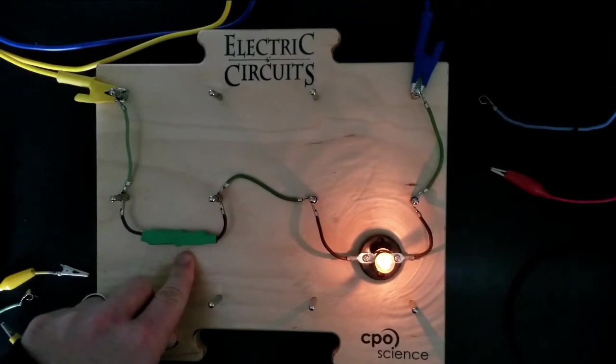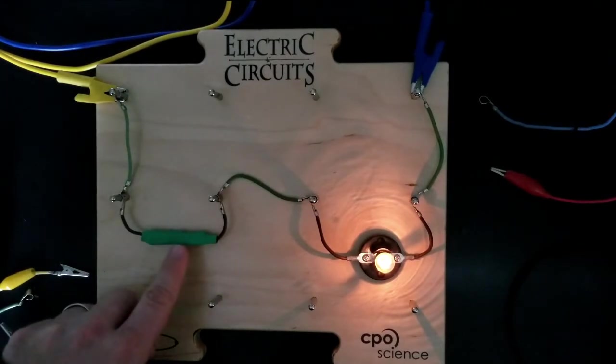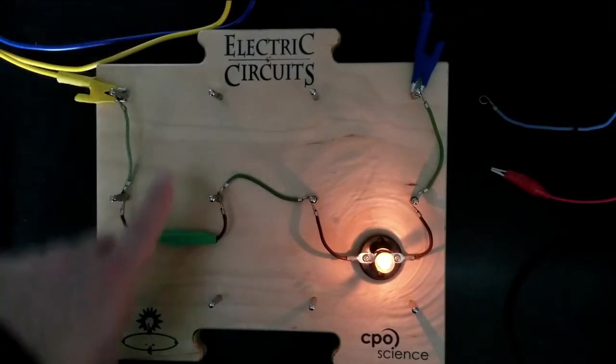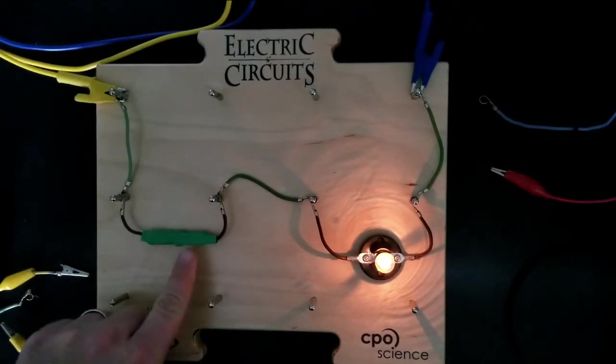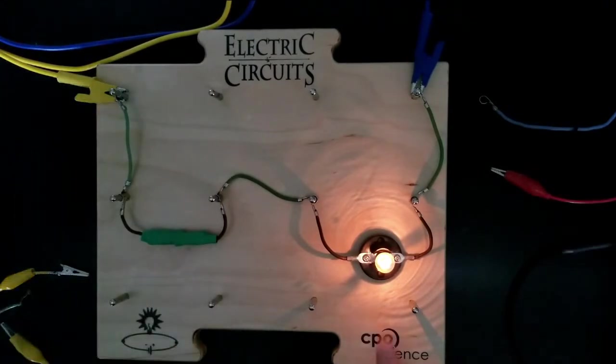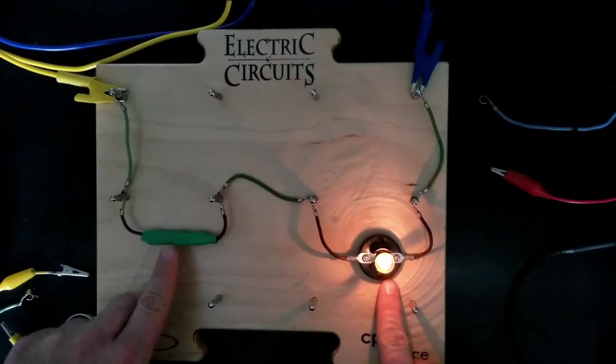What we're going to do here is investigate the current as a function of the electric potential as it passes through just this resistor. We're going to get rid of the light bulb, connect some meters, and then see how the current is affected by just this thing. And then we'll come back and do the same thing for my light bulb. We're going to see how these are both resistors, but they have slightly different properties.